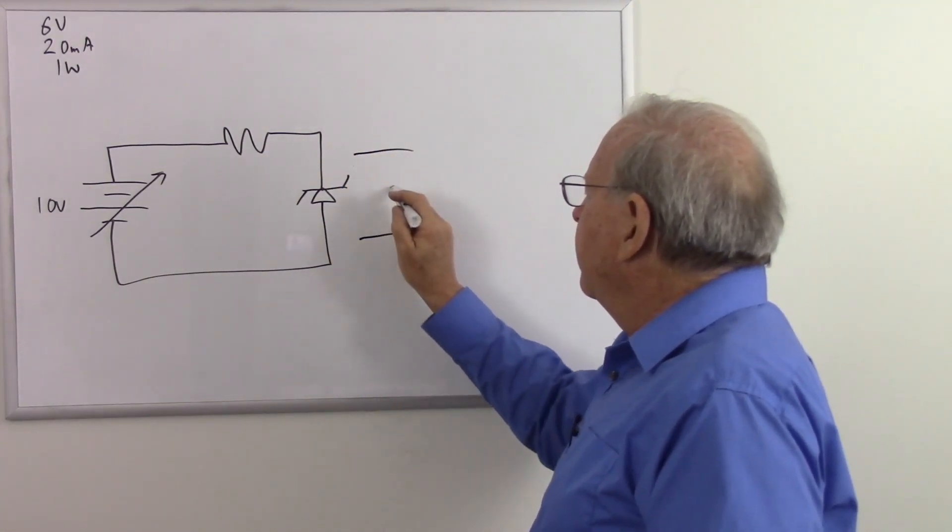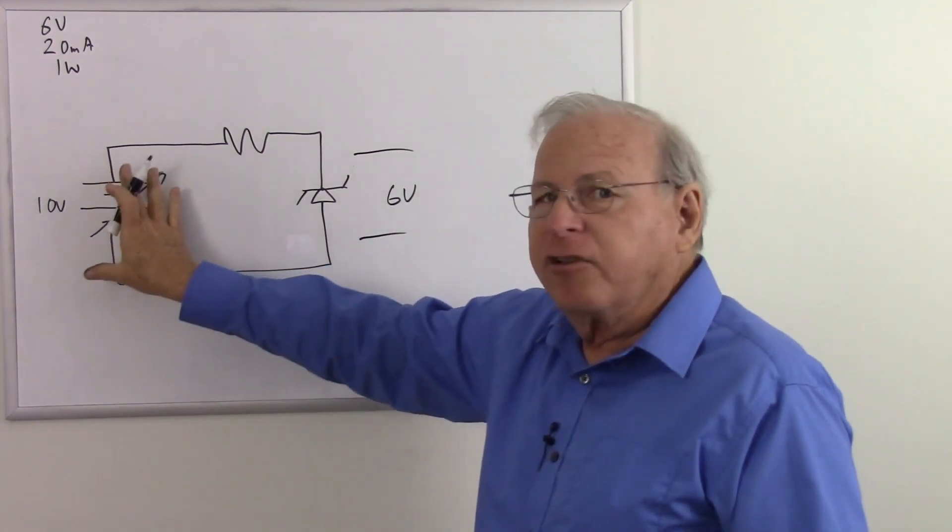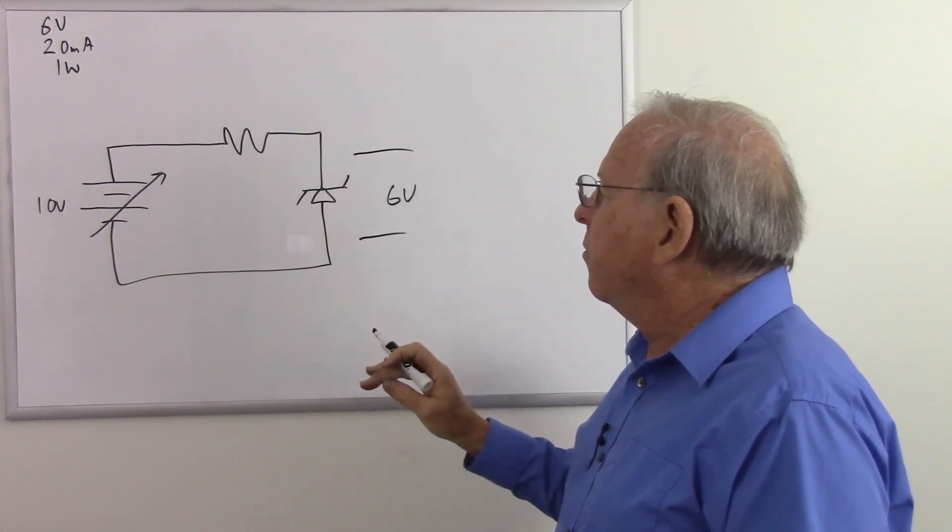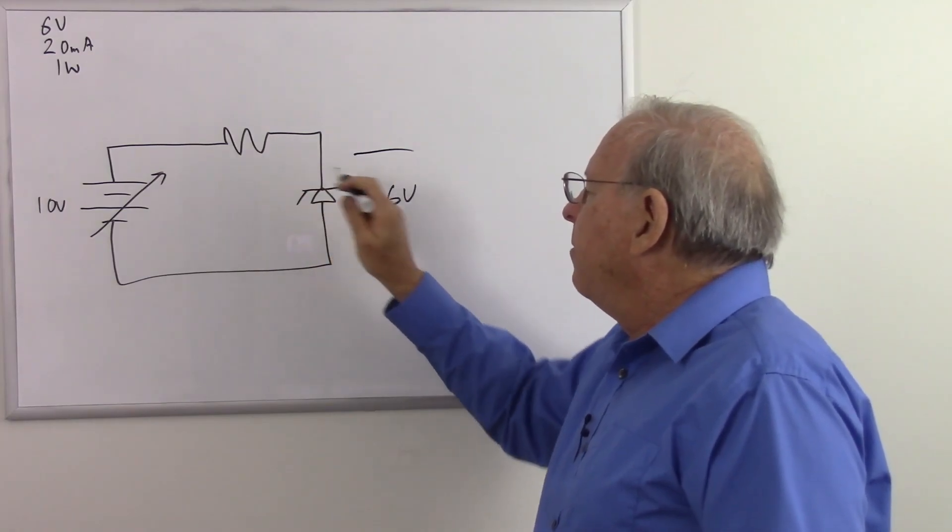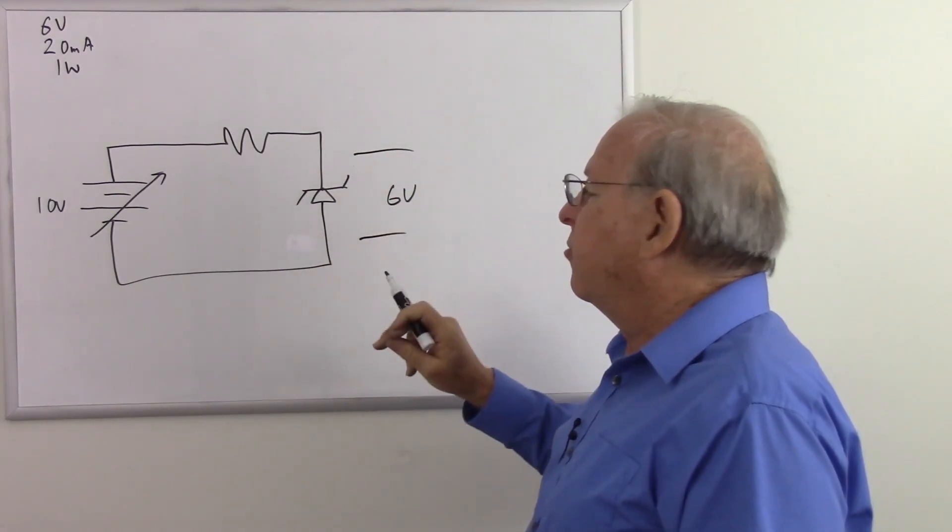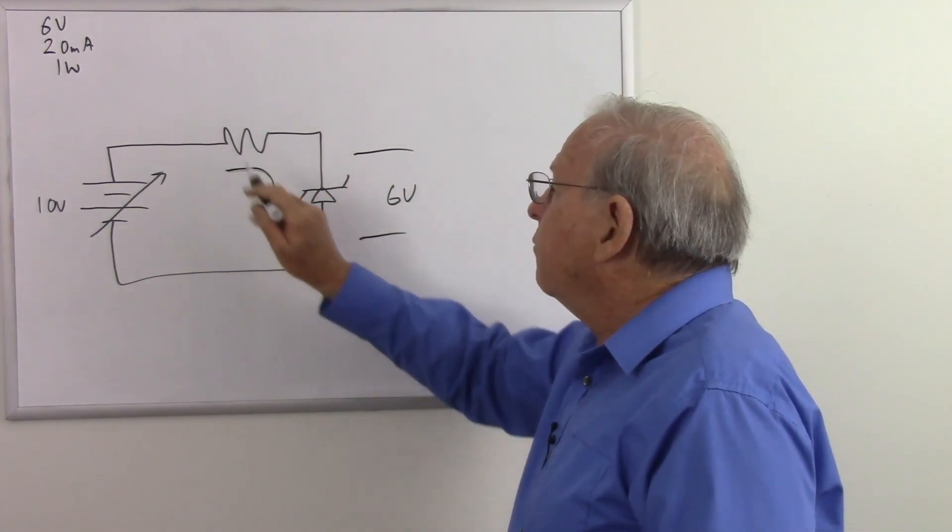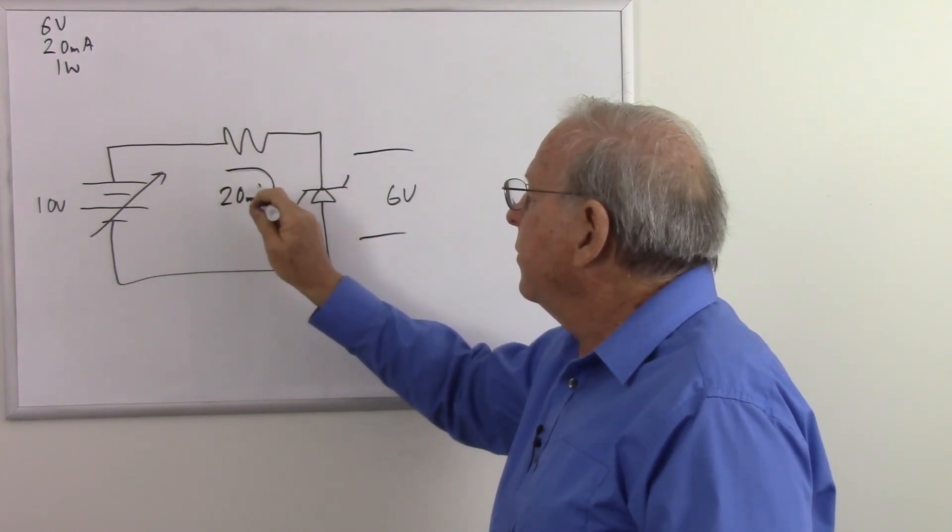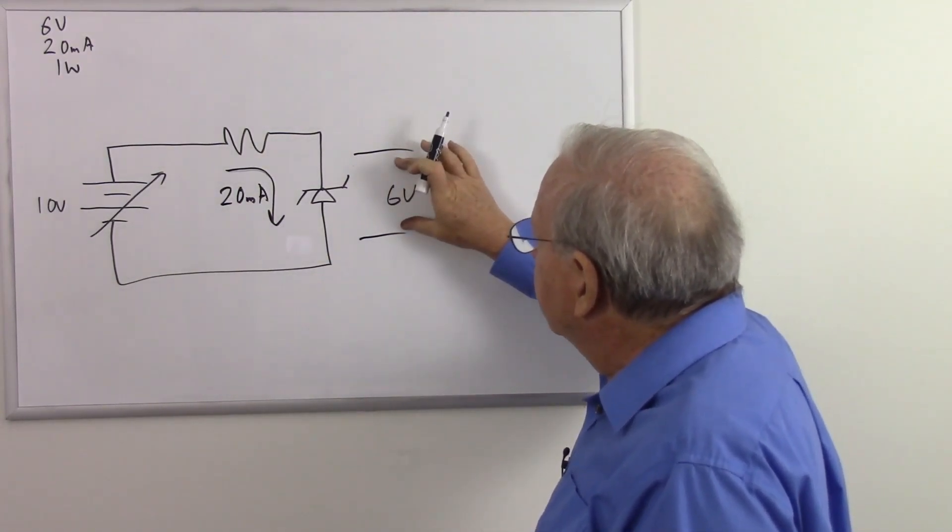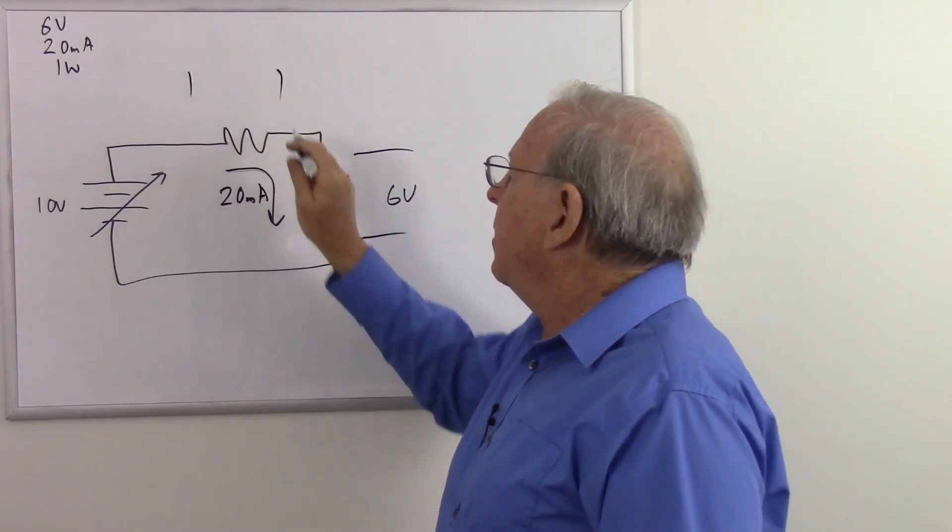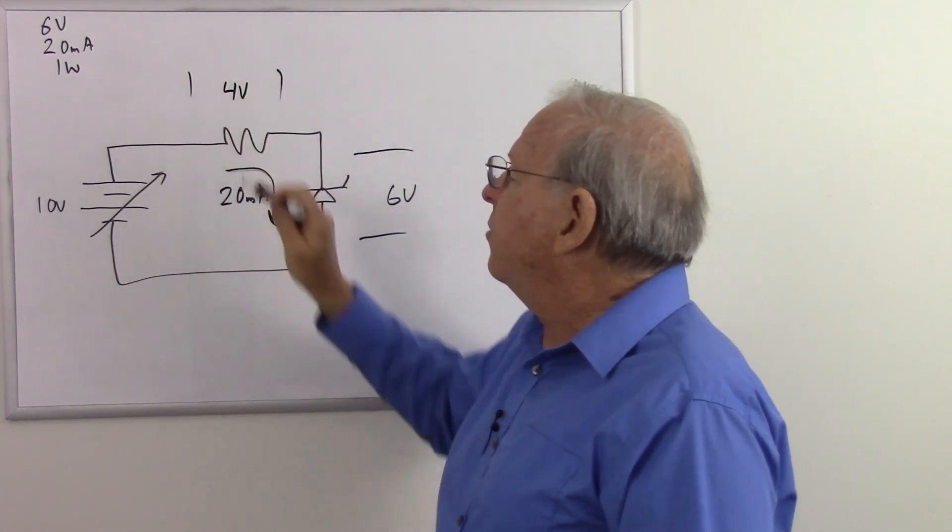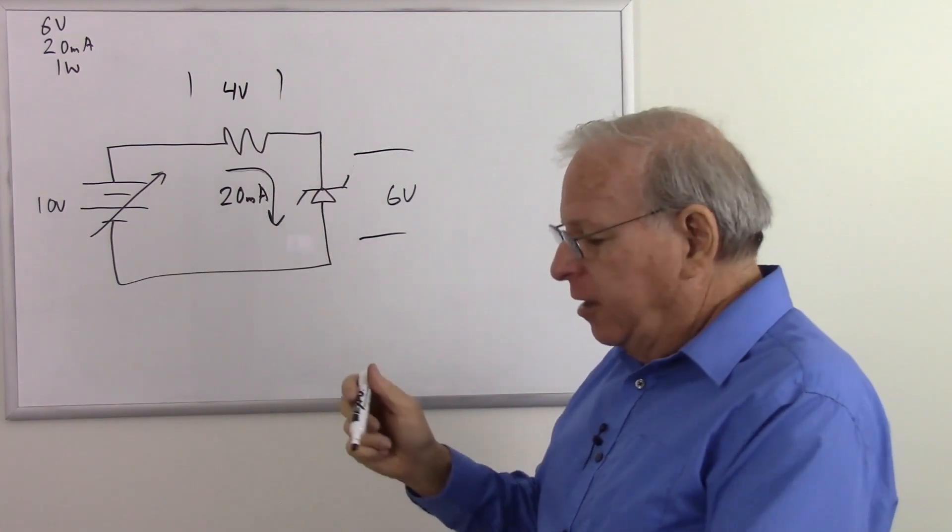So what do we have? We expect to see 6 volts here and that's not going to change. If I change this voltage here, the resistance of this diode is going to change to compensate to keep the voltage constantly at 6 volts. And what I want to do is make sure I have 20 milliamps going through there because that's the best nominal current to keep that at 6 volts. We want to have a nominal current of 20 milliamps. So how do we calculate this resistor?